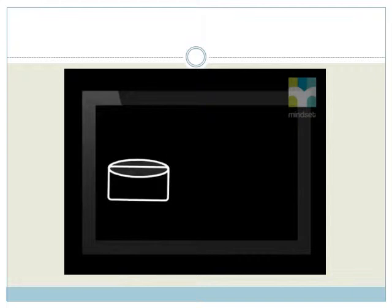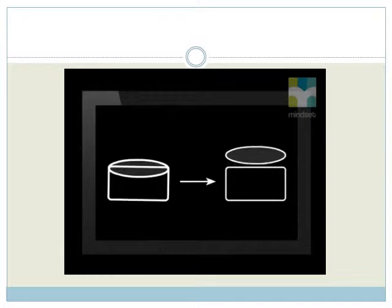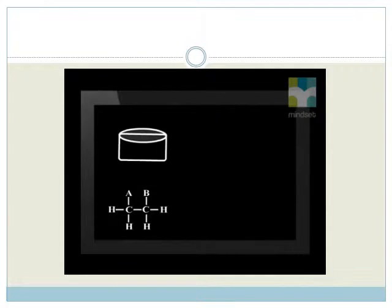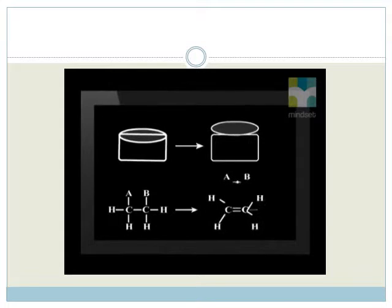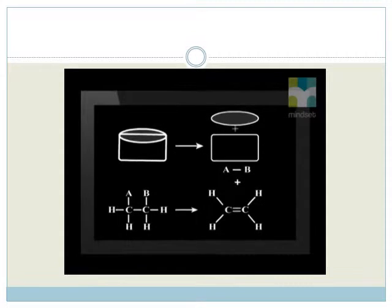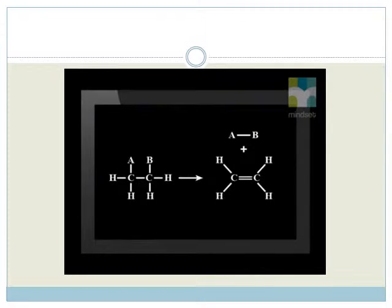Elimination starts with one molecule and removes a part to make two molecules. We start with a saturated molecule, which breaks into a smaller piece and an unsaturated molecule. This is the exact opposite of addition. We can see that the new organic molecule is unsaturated and now contains a double bond.